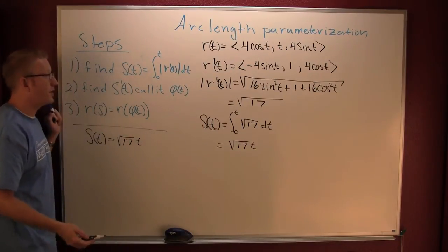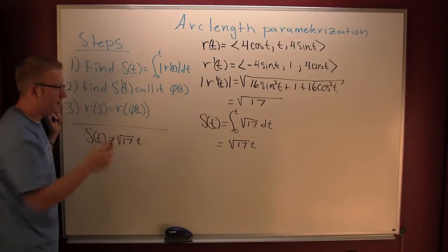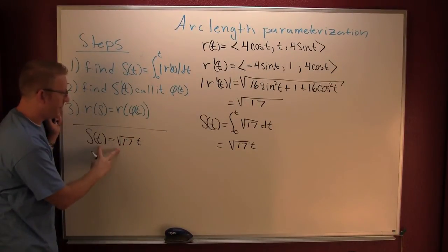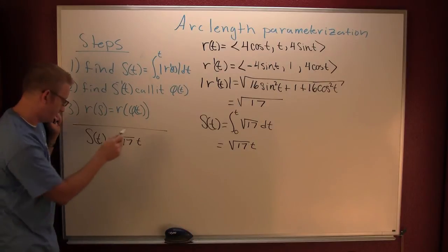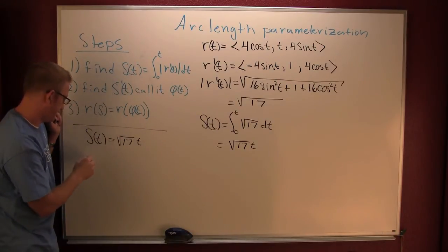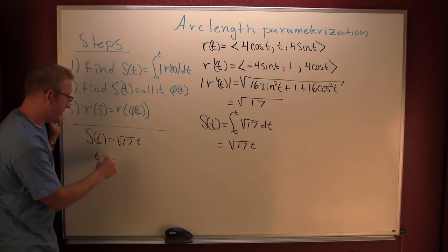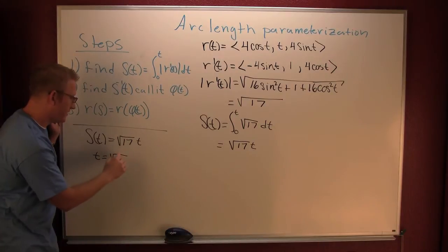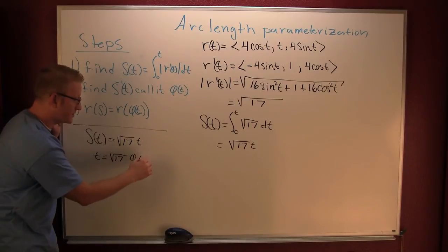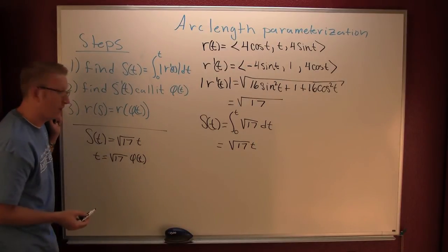Let me find the inverse. So here I have s(t) that's the square root of 17 t. So what I want to do is I'm gonna find φ(t), so I'm gonna switch my s(t) and my t. Yeah, so then I've got my t being the square root of 17 s(t), right here we're trying to find the inverse φ(t).